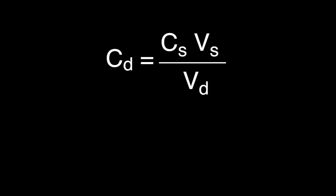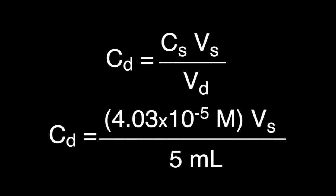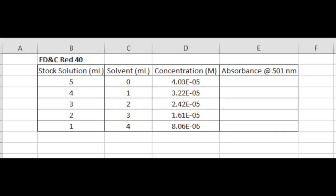In our example, Cs is 4.03 × 10⁻⁵. Vs will vary for each solution, as shown in the table, and Vd is 5 milliliters. A 5 mL total volume was chosen since a cuvette holds approximately 3 mL. Filling in the concentrations we calculated, our table now looks like this.